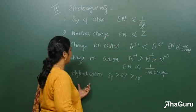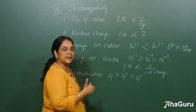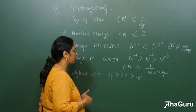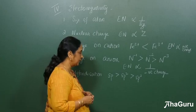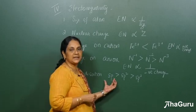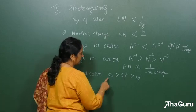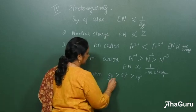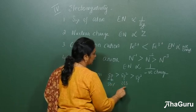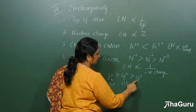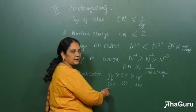The last parameter is hybridization. There are many types, but for now remember SP, SP2, and SP3. When the percentage S character is more, the atom is more electronegative. In SP hybridization there is 50% S and 50% P; in SP2 it is 33.3% S; and in SP3 it is 25% S. So the greater the S character, the more electronegative the atom.